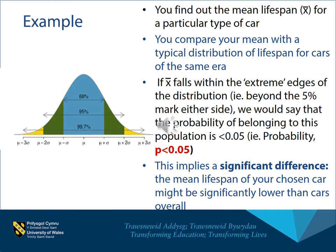Let's take an example. Imagine that you are interested in a particular type of car and you do a little research in your town — maybe a survey — and you find out the mean lifespan for this particular type of car, such as a Vauxhall Opel. You have your value and now you want to compare that mean value with a typical distribution of the lifespan for cars of the same era. You're interested to know whether the lifespan of this particular car is fairly average or whether it's actually rather different to typical cars.